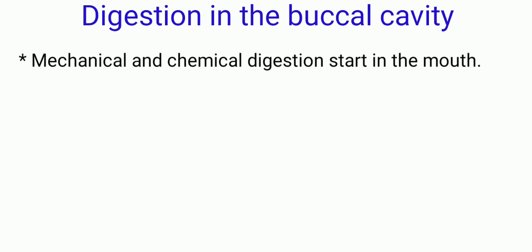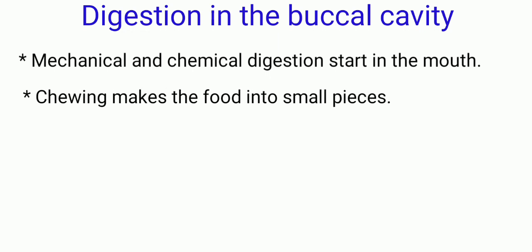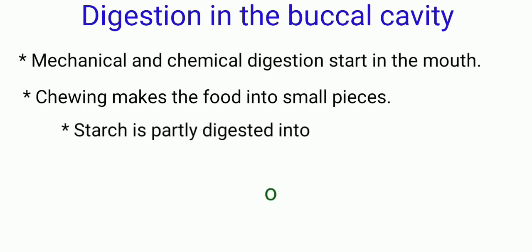Now we will see how digestion takes place in the buccal cavity. Mechanical and chemical digestion both start in the mouth. The mechanical process starts with chewing. Chewing is a physical process of reducing food to small particles, which increases the surface area of food and speeds up the rate of digestion. Chewing mixes the food with saliva. When rice or bread is chewed for some time, starch is digested into maltose.